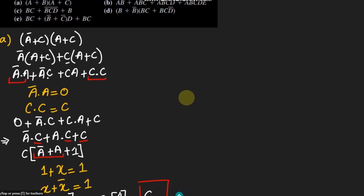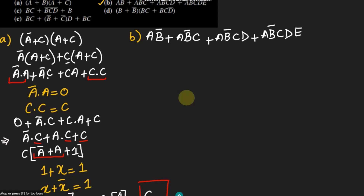Now let us solve part B. We have the expression ab' + ab'c + ab'cd + ab'cde. We can easily see that all of these terms contain ab', where the prime is the complement. So taking ab' common, we get ab'(1 + c + cd + cde).